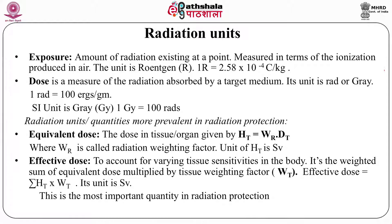Another unit is dose — a measure of radiation energy absorbed by a target medium. Its earlier unit was the rad, and the present-day unit is the gray. One rad was 100 ergs of energy deposited per gram of medium. The SI unit, 1 gray, equals 1 joule of energy per kilogram of medium.